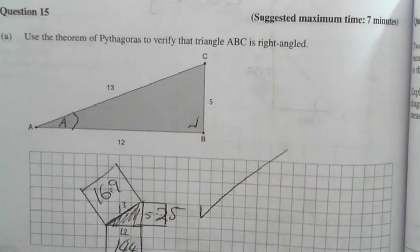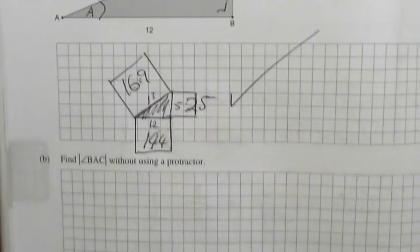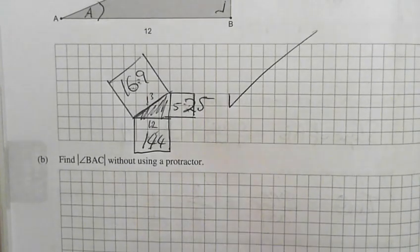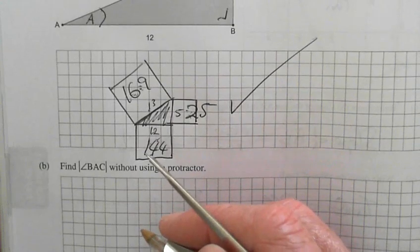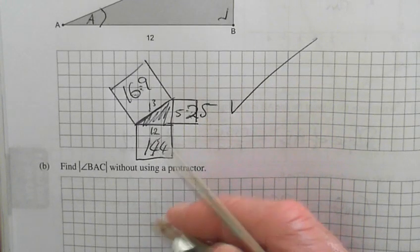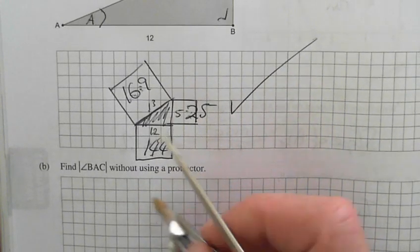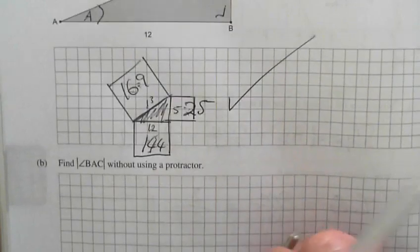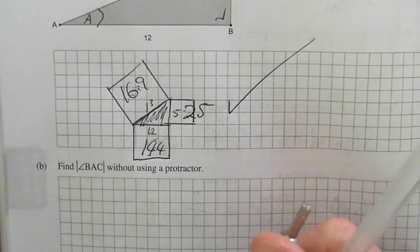All right, so which formula would you like to use? Remember I told you when you're getting an angle, you use the inverse formula, don't you? So which one do you want to use? Do you want to use sine, cos, or tan? Can you use all three? Yeah, right.